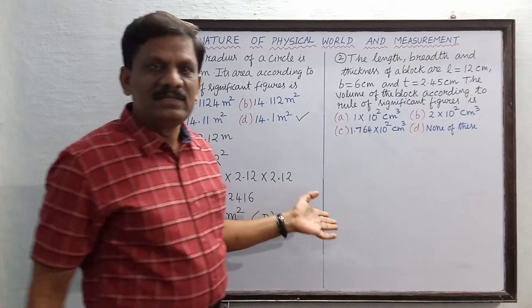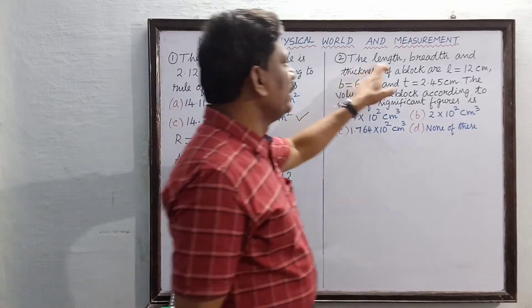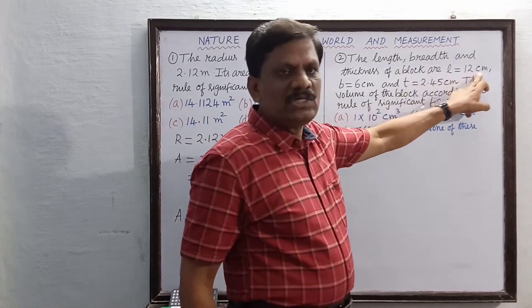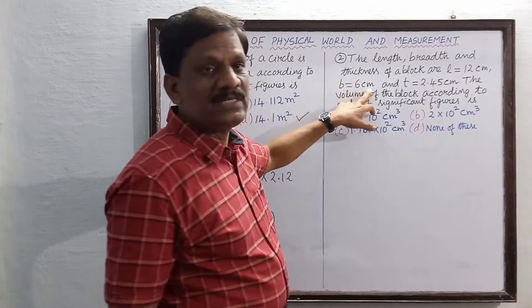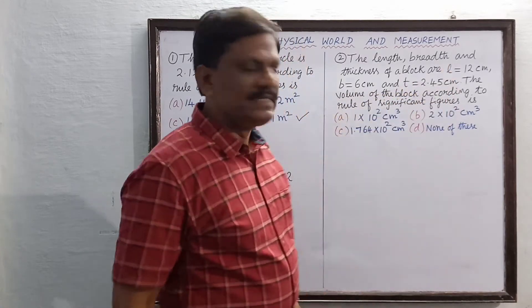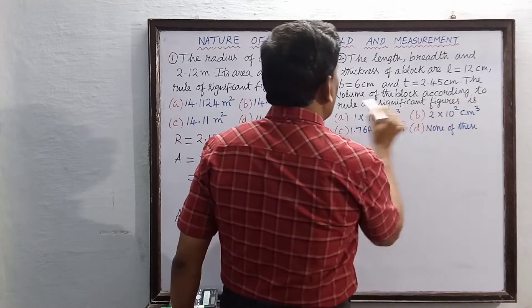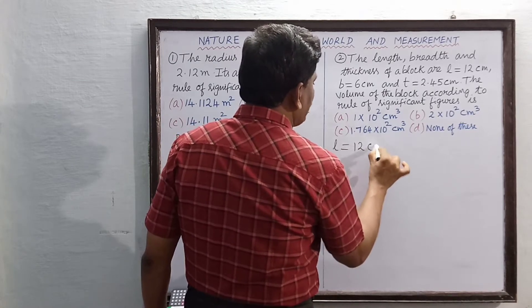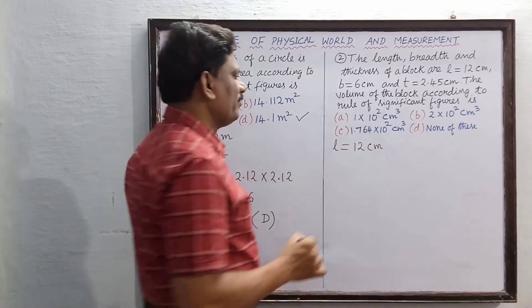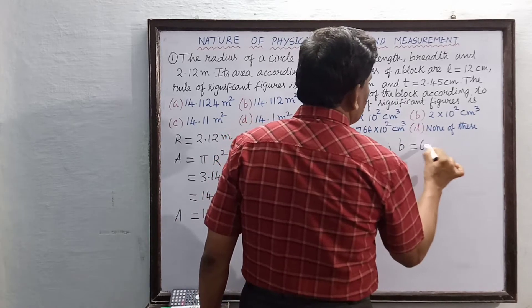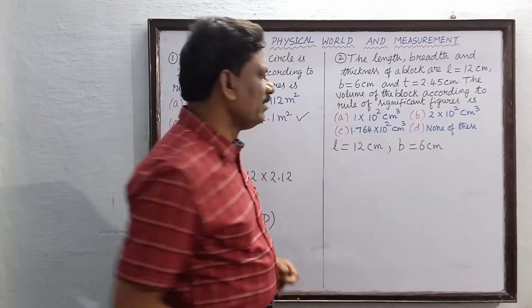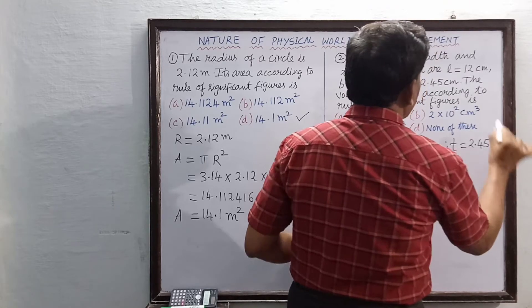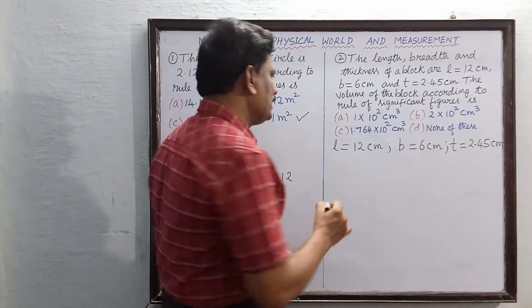The second problem: a block like a brick has length l = 12 cm, breadth b = 6 cm, and thickness t = 2.45 cm. We need to find the volume according to the rules of significant figures. Here, 12 cm has two significant figures, 6 cm has only one significant figure, and 2.45 cm has three significant figures.